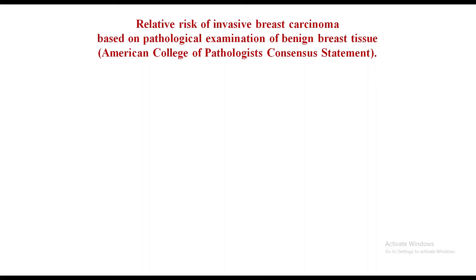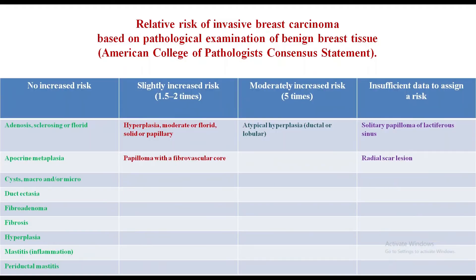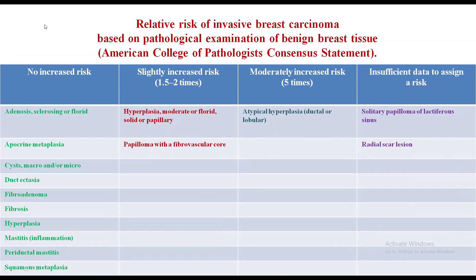You should be aware of the relative risk of invasive breast carcinoma based on pathological examination. This table shows the relative risk. There is a category where insufficient data exists to assign a risk — examples include solitary papilloma of lactiferous sinus and radial scars. Moderately increased risk is five times and this includes atypical hyperplasia, which is ductal or lobular.